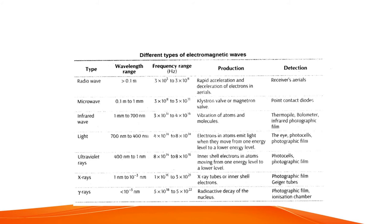Visible light is detected by the human eye, by most animals, photocells, and photographic films. Ultraviolet rays have wavelengths from 400 nanometers to 1 nanometer and frequencies from 8 × 10¹⁴ Hz to 8 × 10¹⁶ Hz. They are produced by electrons in atoms moving from one energy level to a lower energy level, and are detected by photocells or photographic films.